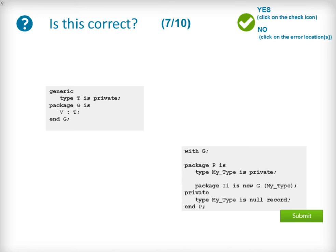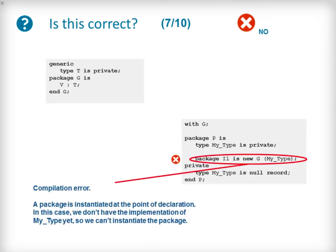Question 7 has a simple private type used as a generic parameter for the generic package G. T is used to type a public variable within instances of G. Our package P declares a private type called myType and uses it to instantiate the generic package G. The private section of P goes on to implement myType as a null record. The code is incorrect — compilation will fail because myType is not implemented at the point it is used to instantiate package G. A package is instantiated at the point of declaration, and at that point we don't yet have the implementation of myType.